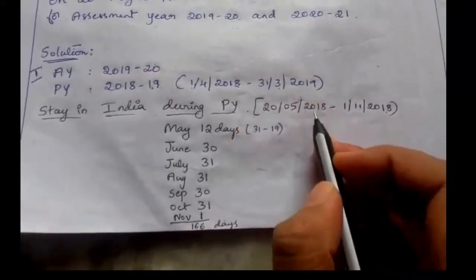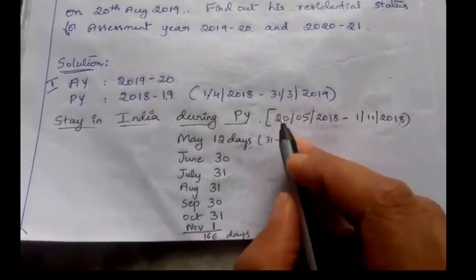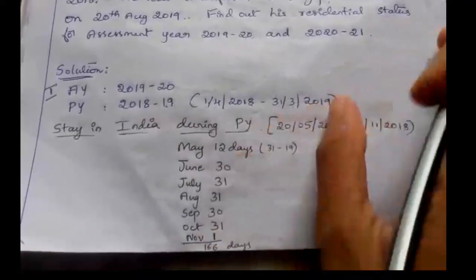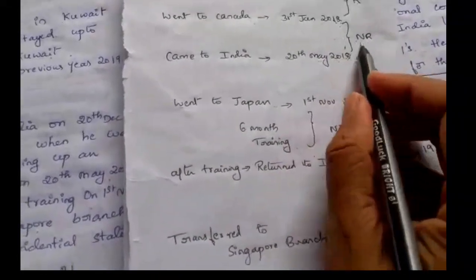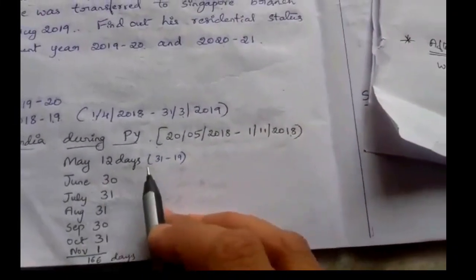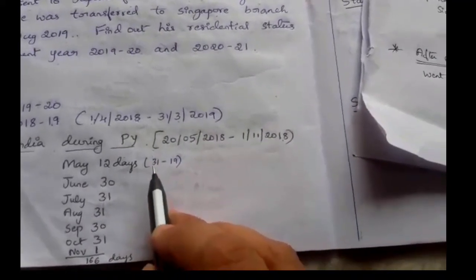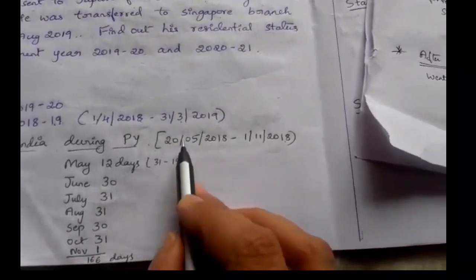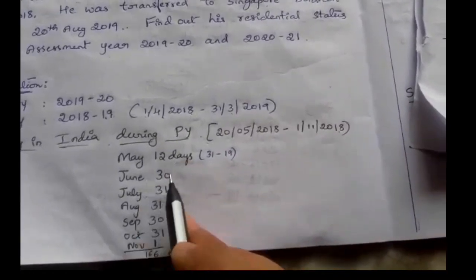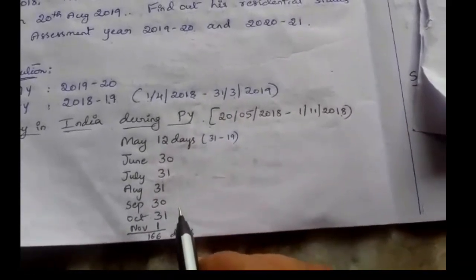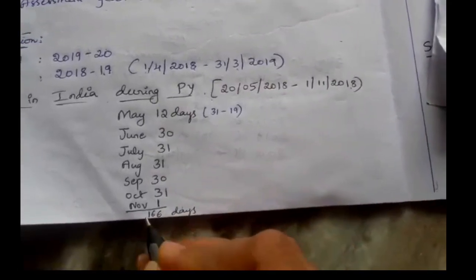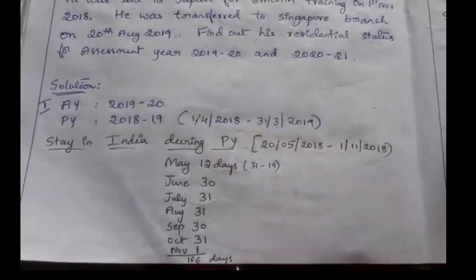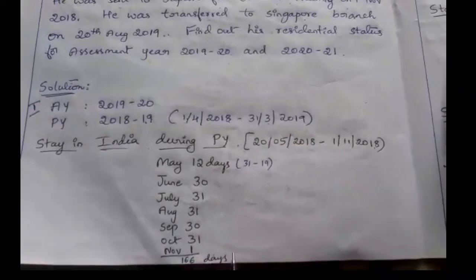Now we will calculate the days. In May month, total 31 days. He came on 20th May, so before that he was non-resident. We exclude the first 19 days and from 20th May onwards we include - so May gives 12 days. June: 30 days. July: 31 days. August: 31 days. September: 30 days. October: 31 days. He came back on 1st November, so November: 1 day. Total: 166 days. He does not satisfy the first basic condition of 182 days stay in India.